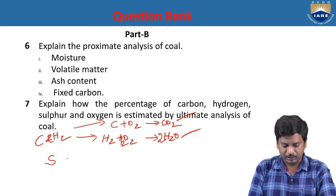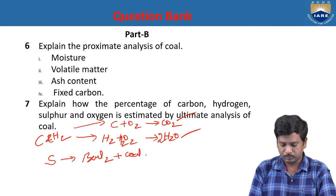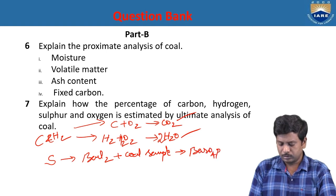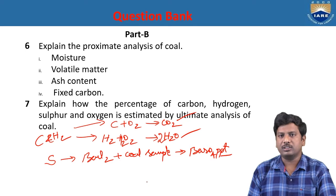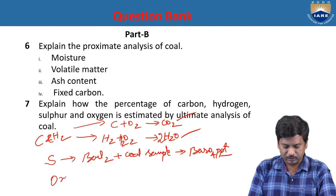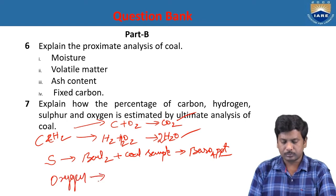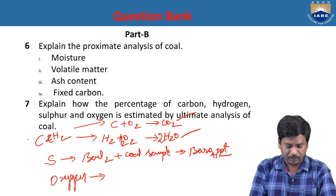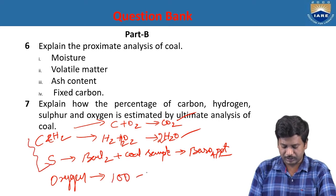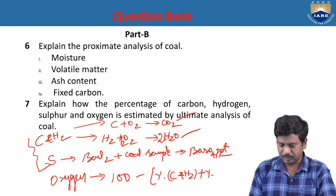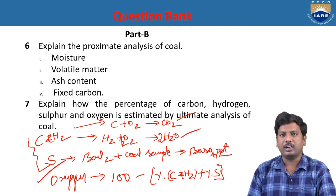Next, sulfur is determined by adding barium chloride solution to the coal sample to get barium sulfate precipitate. From the weight of the barium sulfate precipitate, we can determine the individual sulfur content. Oxygen is determined indirectly by subtracting the combined percentages of carbon, hydrogen, sulfur, nitrogen, and ash from 100 to get the percentage of oxygen.